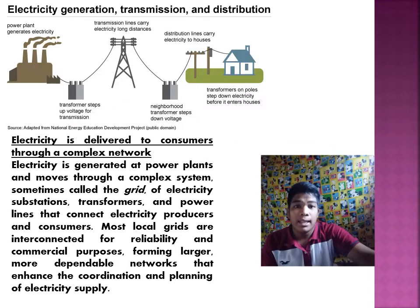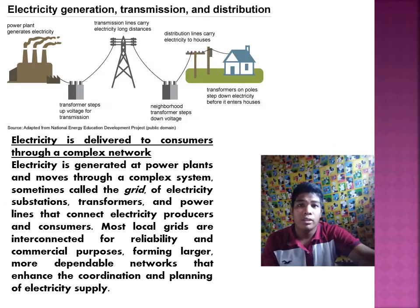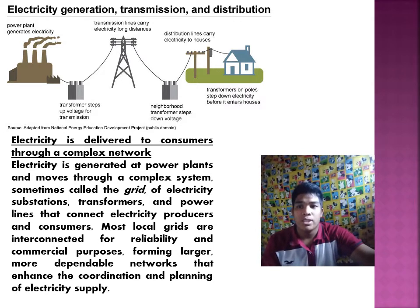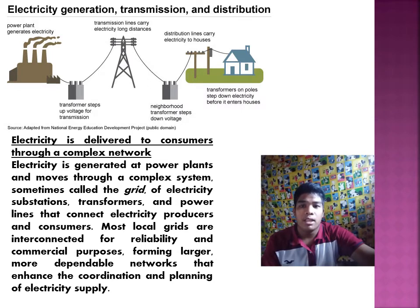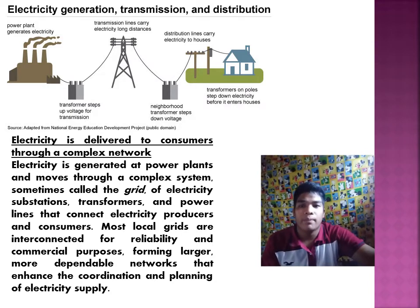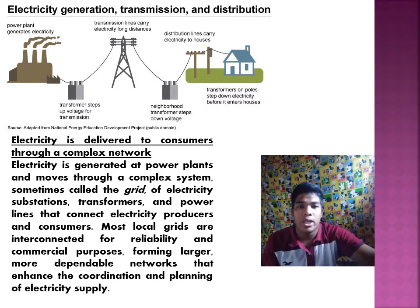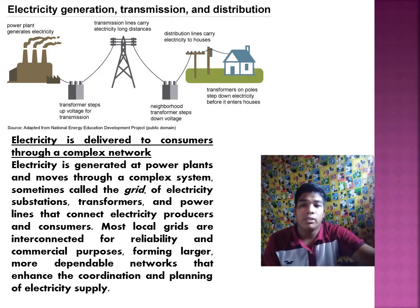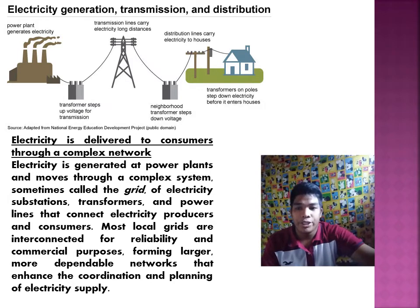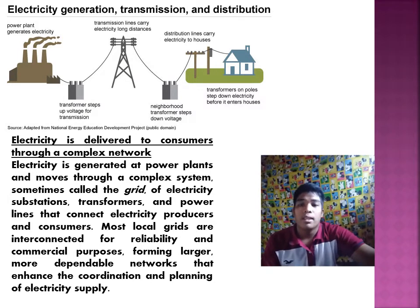Electricity is delivered to consumers through a complex network. It is generated at power plants and moves through a complex system — sometimes called the grid — of electric substations, transformers, and power lines that connect electricity producers and consumers. Most local grids are interconnected for reliability and commercial purposes, forming larger, more dependable networks that enhance the coordination and planning of electricity supply.